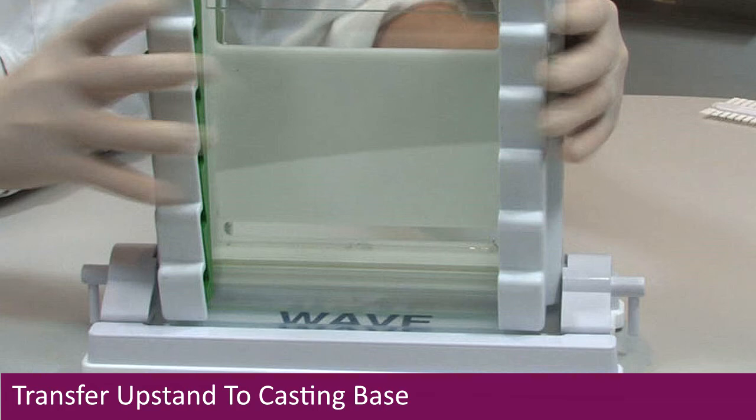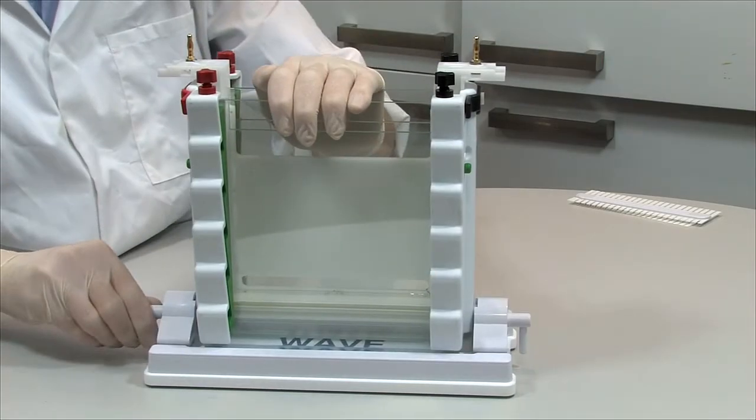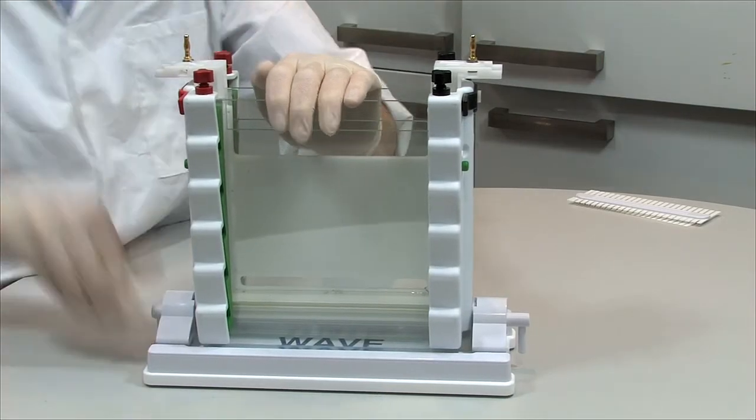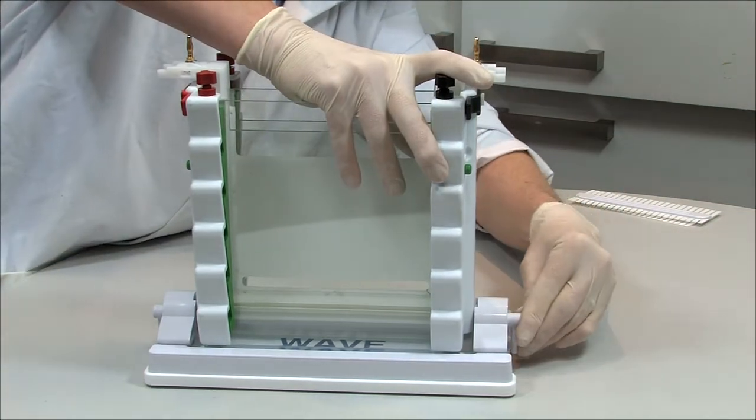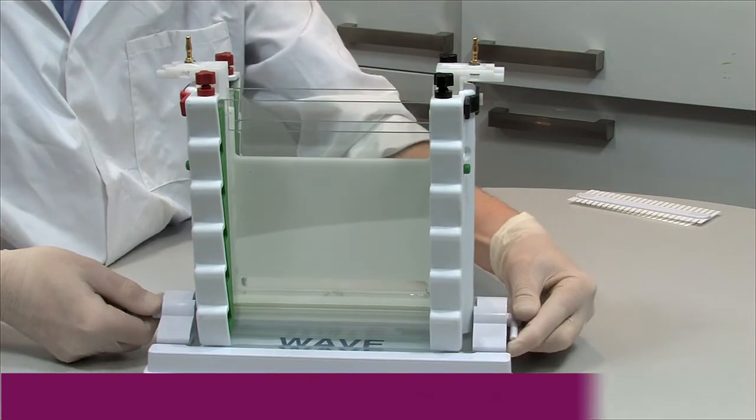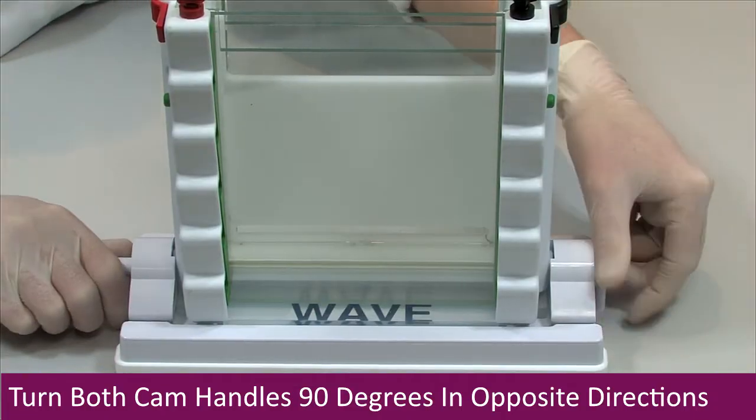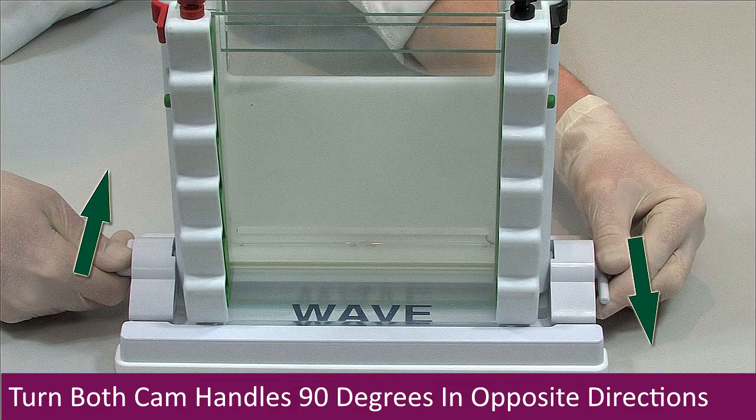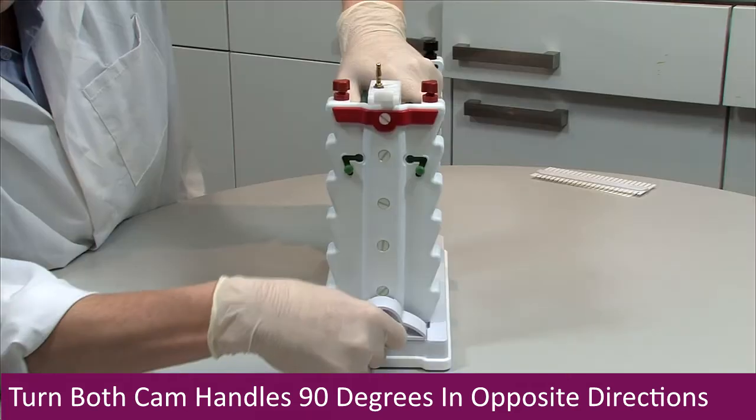It may be necessary to apply gentle pressure to the top of the upstand to enable the cams to locate in the holes within the upstand. Secure the upstand to the casting mat by turning the cam handles in opposite directions. By 90 degrees the cams will feel tight.